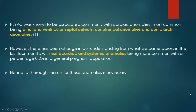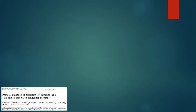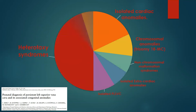Earlier, PLSVC was known to be associated with cardiac anomalies like septal defects, conotruncal anomalies, and arch abnormalities. However, there has been a change in our understanding from what we came across in the last 4 months, with extracardiac and systemic anomalies being more common. This is an original article published in the Journal of Ultrasound in Obstetrics and Gynecology. They came across a total of 82 cases of PLSVC, with heterotaxy and isolated cardiac anomalies being more common.